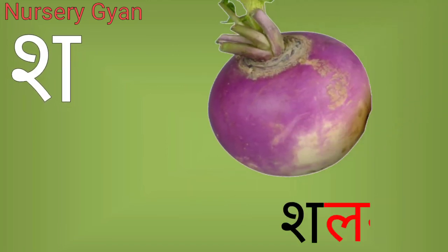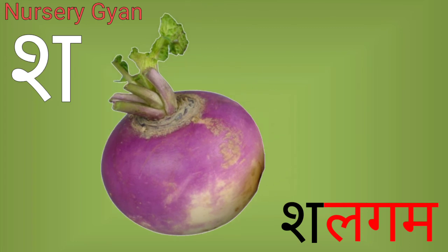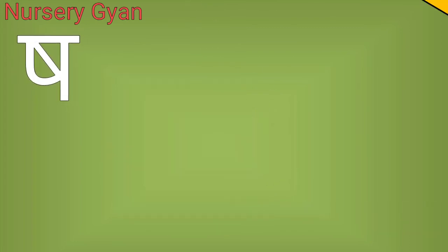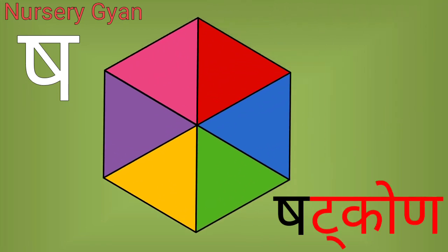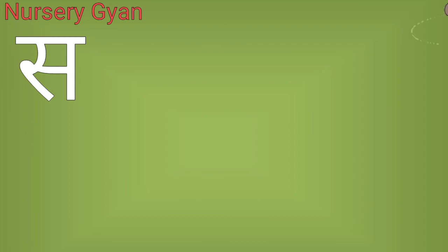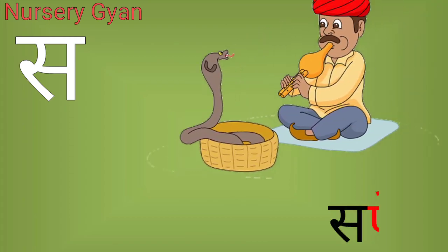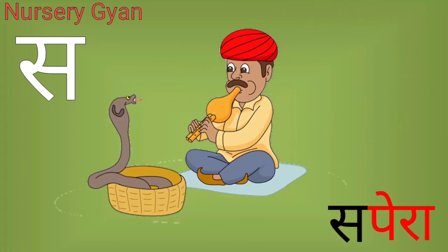श — श से शलगम। ष — ष से षटकोण। स — स से सपेरा।